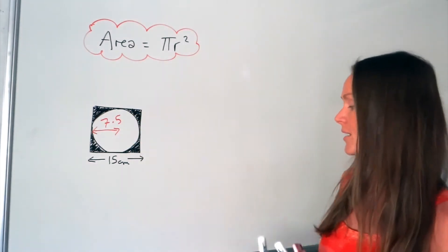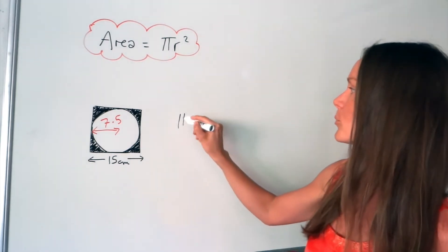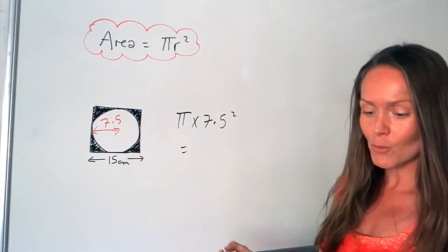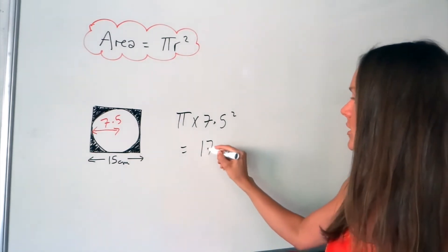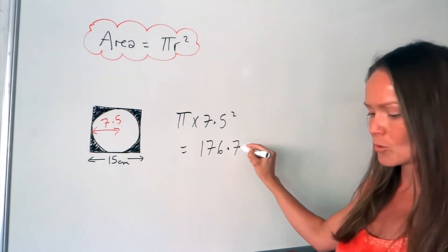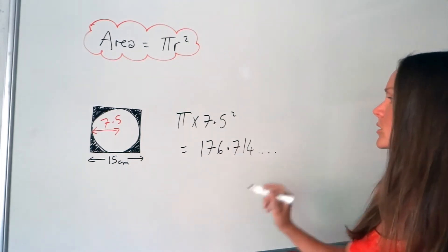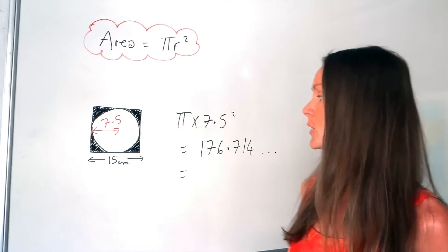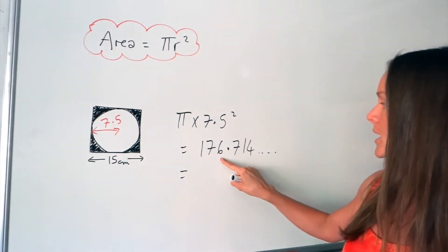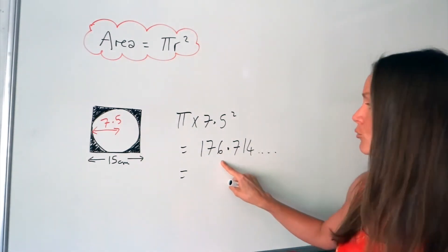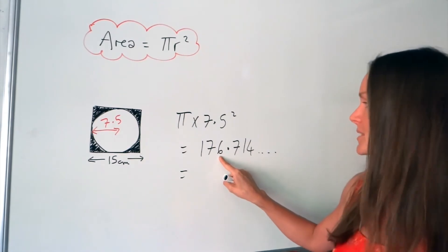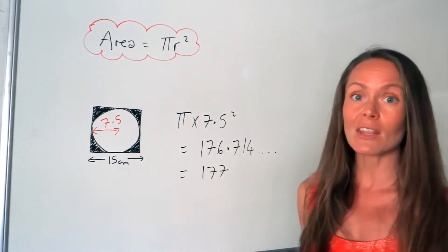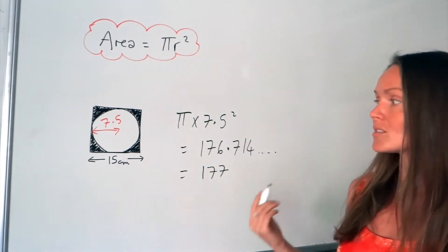So to work out the area, we just do pi times 7.5 squared. If you put that in the calculator, you should get 176.714... And I'm going to be rounding to three significant figures. So 1, 2, 3 — the fourth figure rounds the 6 up to 7, so I'm left with 177. Don't forget the units for area — they're always squared.